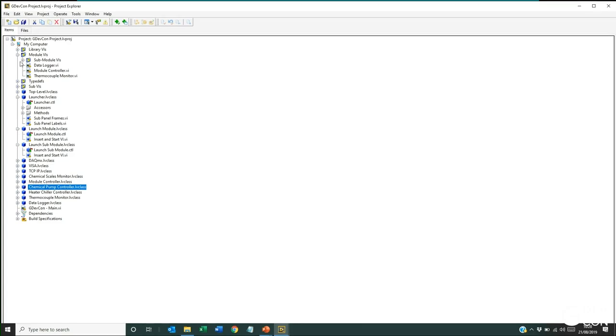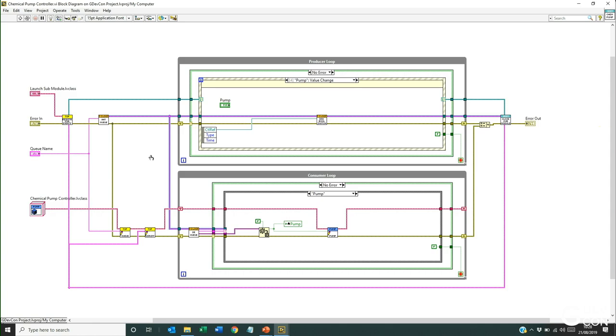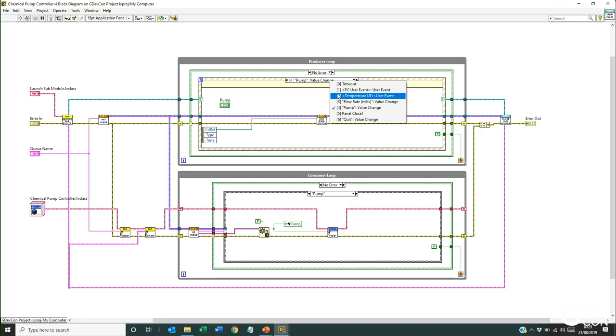But if you can see, we've got our class coming in, so that's giving us our user event data. We're registering for events, we're popping that user event data into the local class, which is a chemical pump class. If we look at our producer loop, there's not much going on here. You've got your user event for closing the loop. You've got temperature user event, which is just reading the temperature. Flow rate, change your flow rate, so enqueue that into the consumer loop. These are in the wrong order. Panel close should be higher up. Panel close, someone presses the X, and pump, turn the pump on and off.